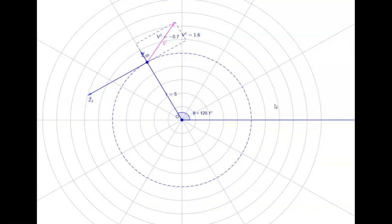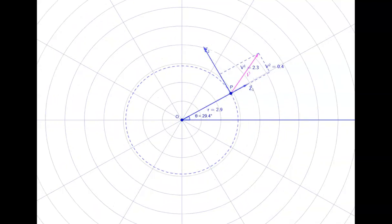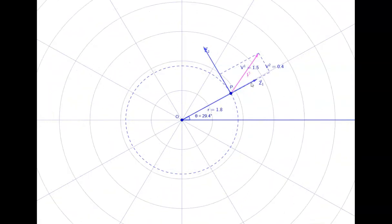Let's change the scaling factor for r to 2. Similar to what happened with affine coordinates: the component values change and the length of the basis vector changes, but the vector itself and the point don't change. The same idea applies here as with affine coordinates. That covers plane polar coordinates.